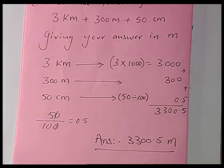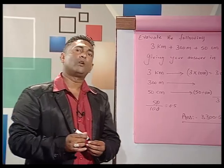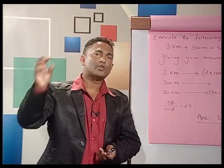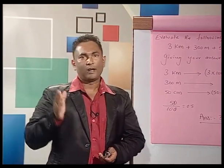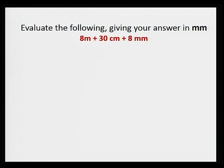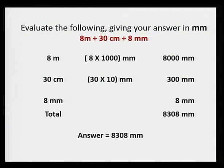One important thing: whenever you are working with different units, to perform the operation all numbers must be converted into a single unit. Here is another example: evaluate the following giving your answer in millimeters. Convert 8 meters to millimeters by multiplying by 1,000: equals 8,000 millimeters. Convert 30 centimeters to millimeters by multiplying by 10: equals 300 millimeters. 8 millimeters is already in millimeters. Adding: 8,000 plus 300 plus 8 equals 8,308 millimeters.